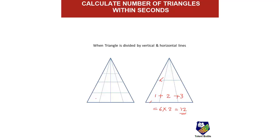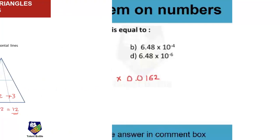In the next example, number the vertical triangles: 1+2+3+4 = 10. Now multiply by the number of horizontal lines: 1, 2, 3, 4 — so 10 × 4 = 40. Total number of triangles is 40.